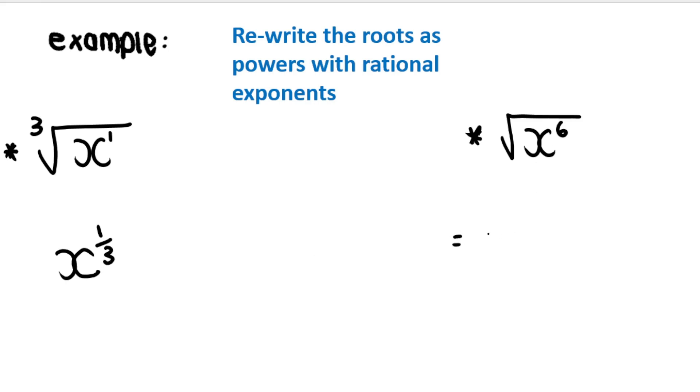And over here, x to the power of what is on the inside? Six. What is on the outside? An invisible two. How do I know that? Because it's a square root. Square roots, invisible two. So that's going to be x to the power of three.